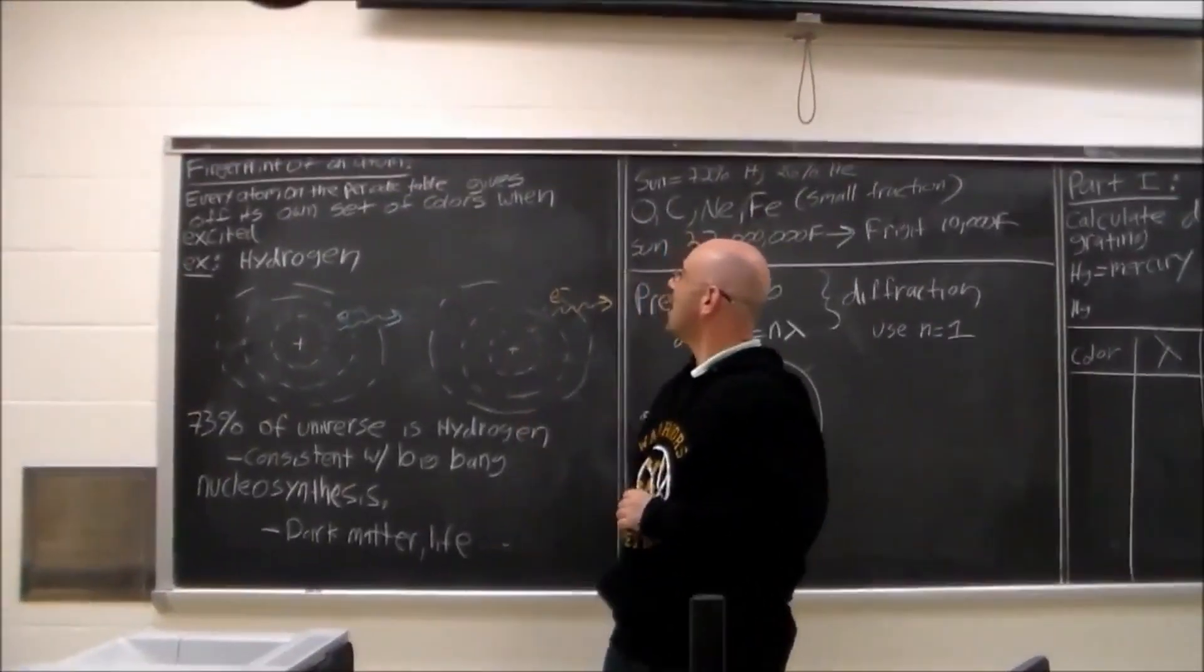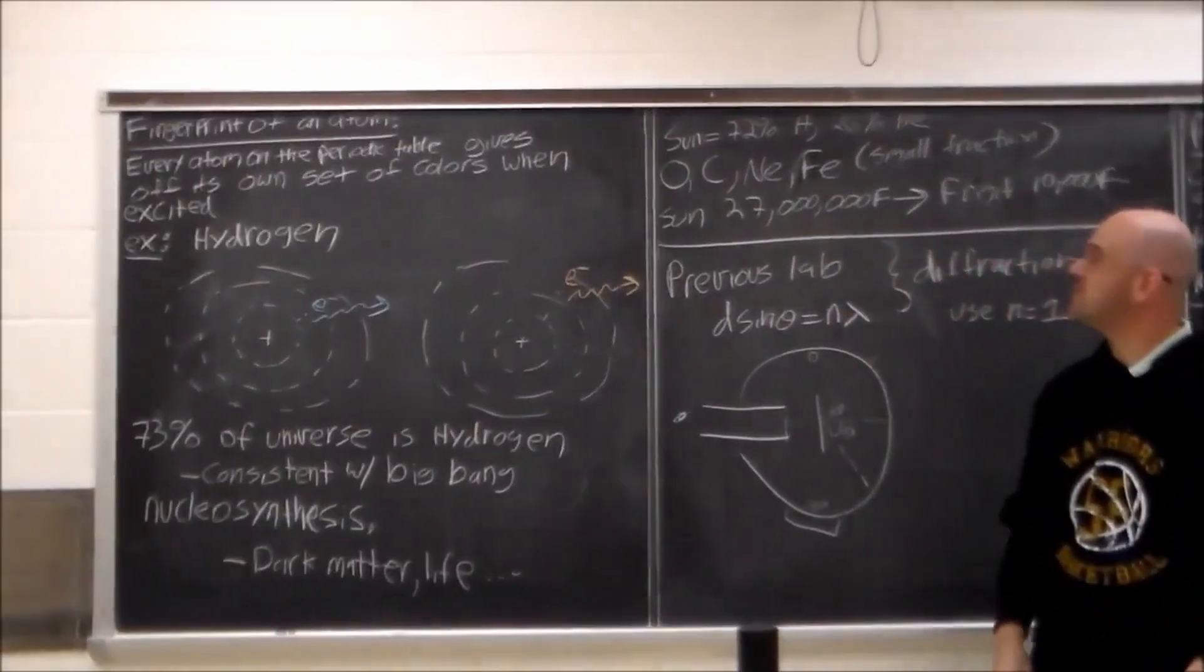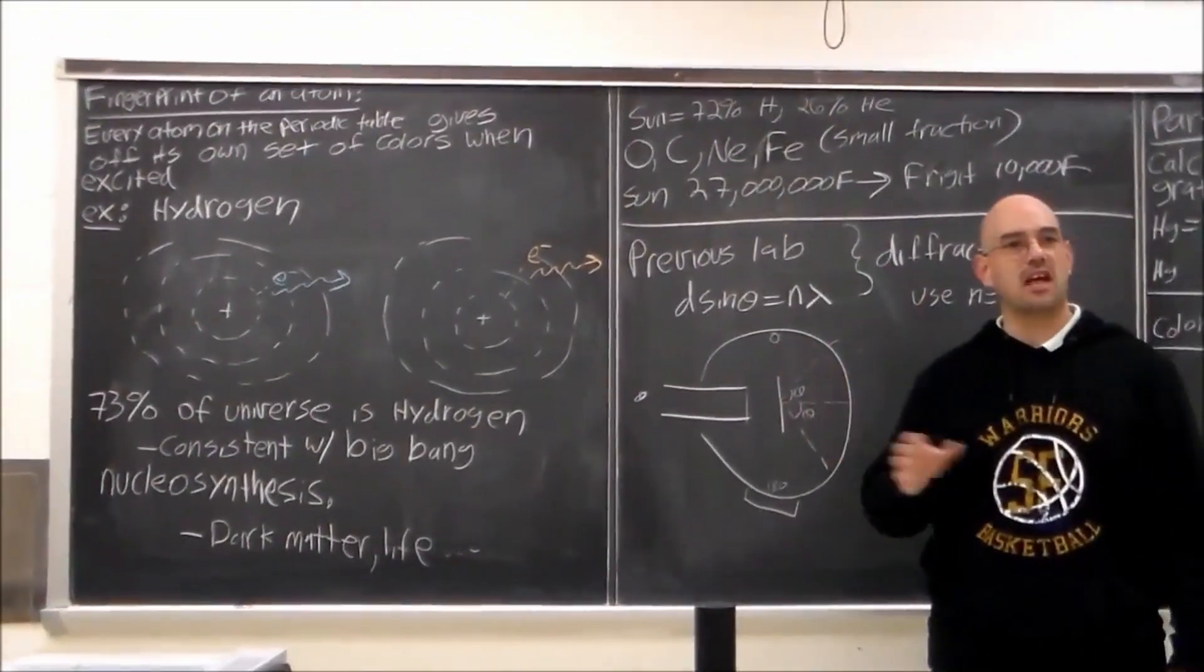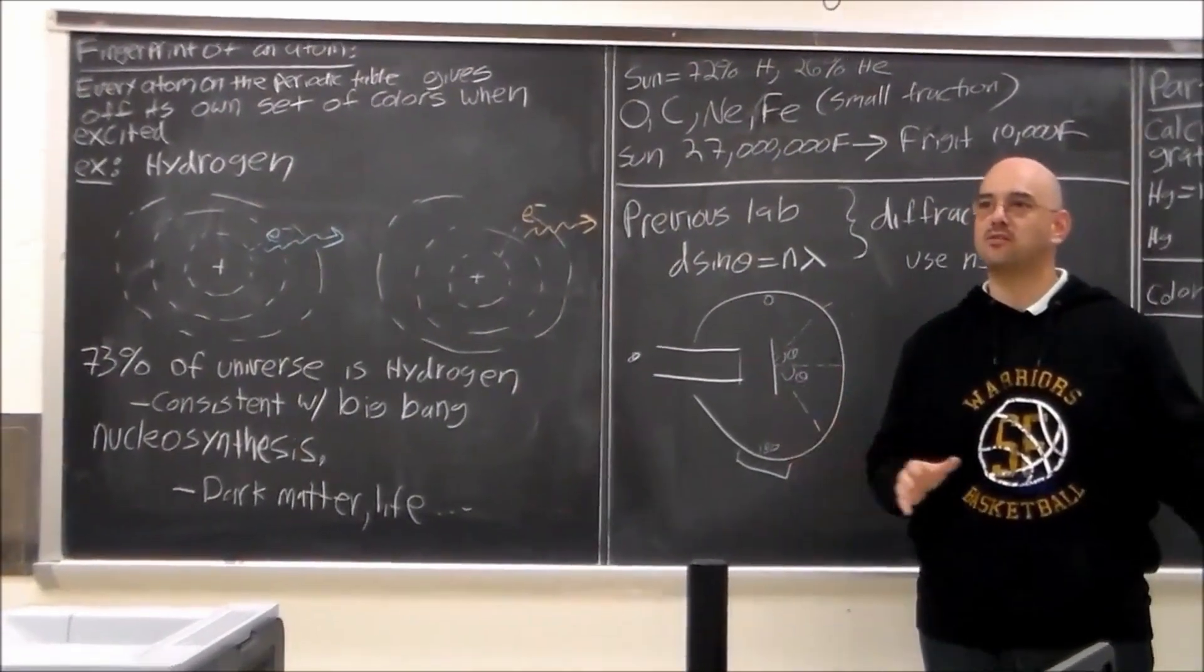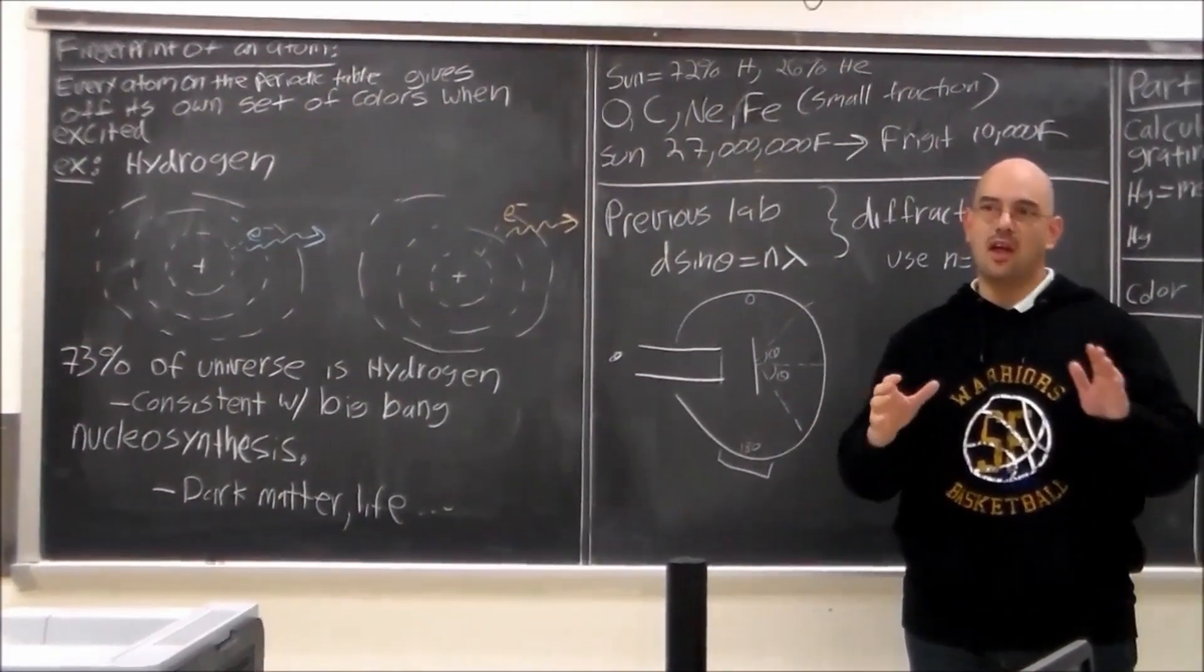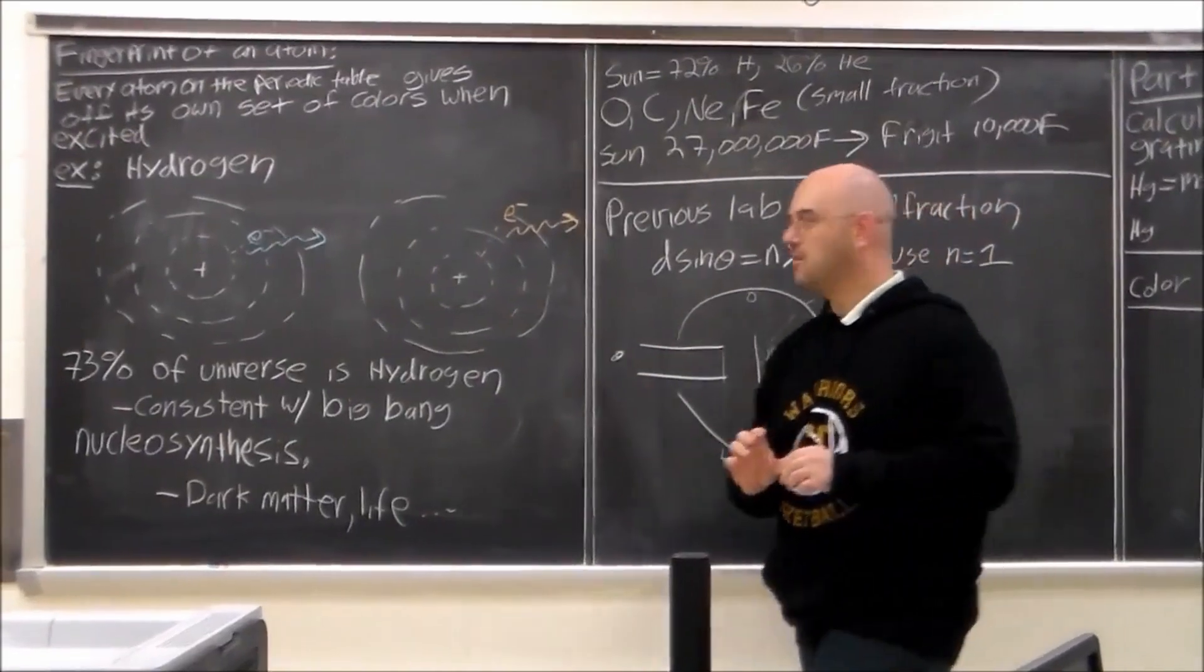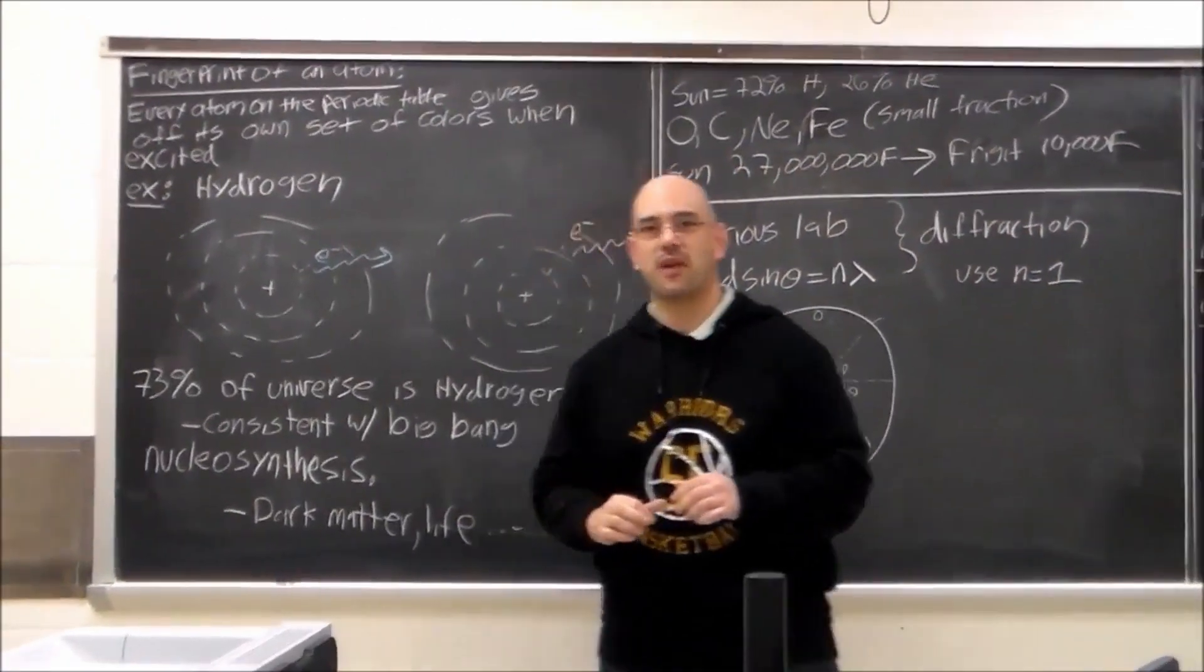So every atom on the periodic table gives off its own color. It's got like a fingerprint. Just like everyone in this room is individual and you have your own fingerprint, every atom has its own fingerprint as well.